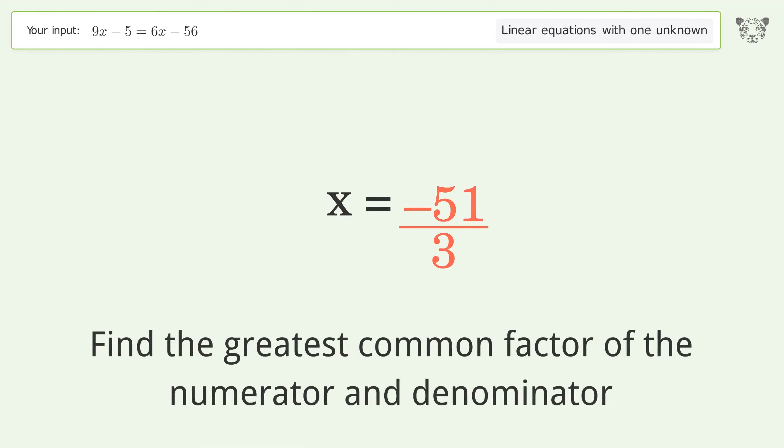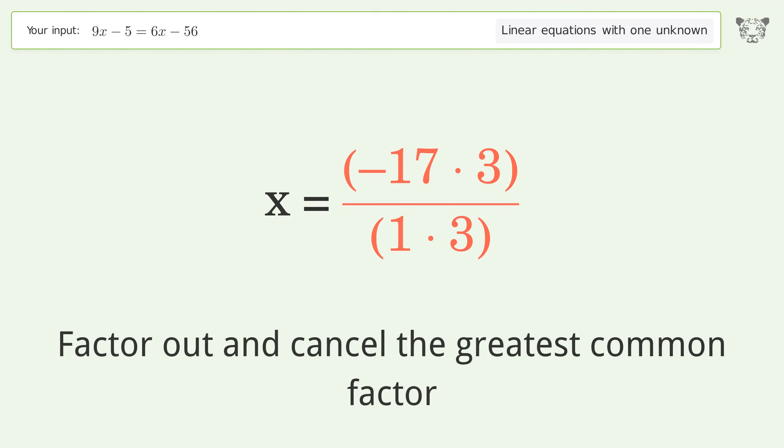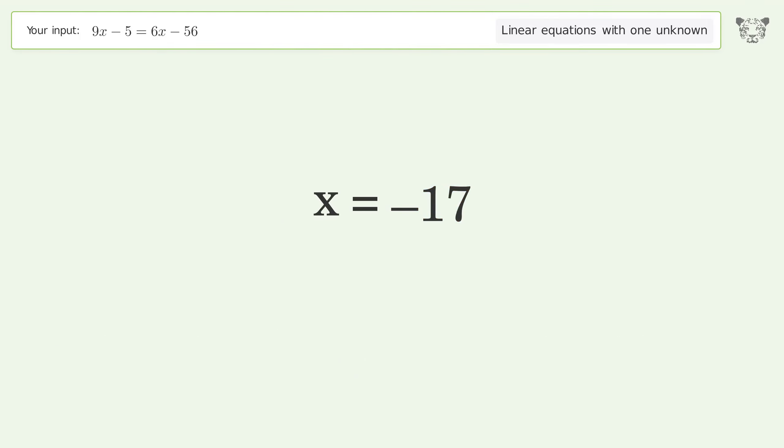Find the greatest common factor of the numerator and denominator. Factor out and cancel the greatest common factor. And so the final result is x equals negative 17.